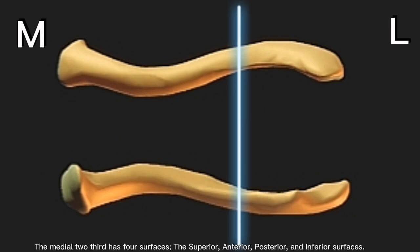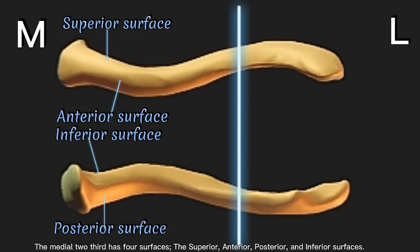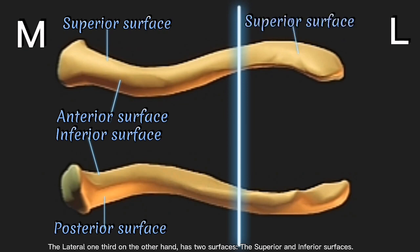The medial two-third has four surfaces: the superior, anterior, posterior, and inferior surfaces. The lateral one-third, on the other hand, has two surfaces, the superior and inferior surfaces.